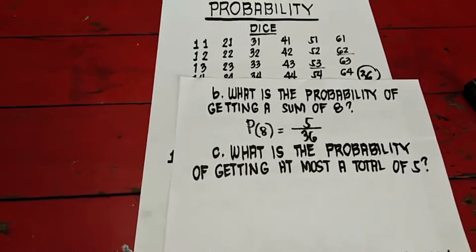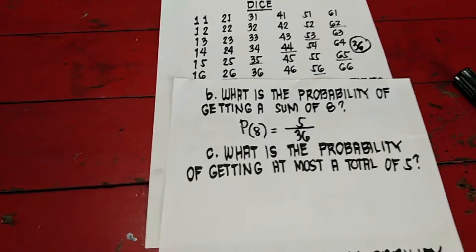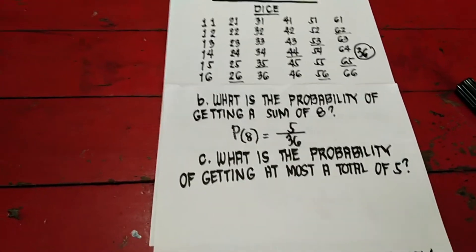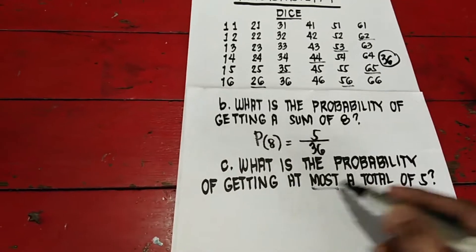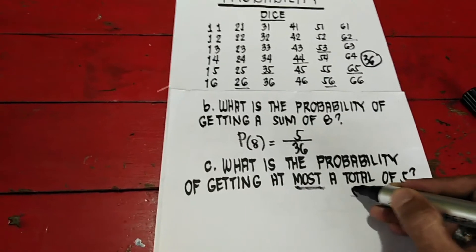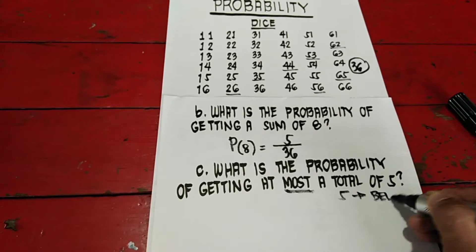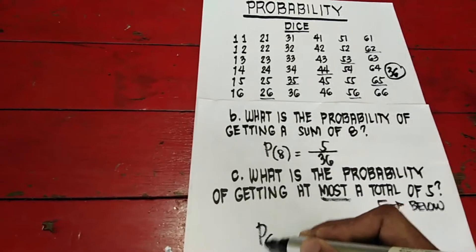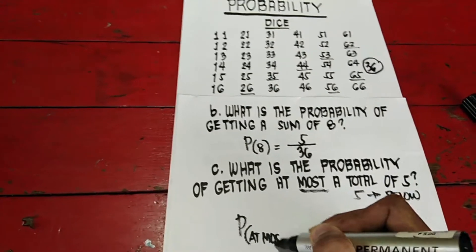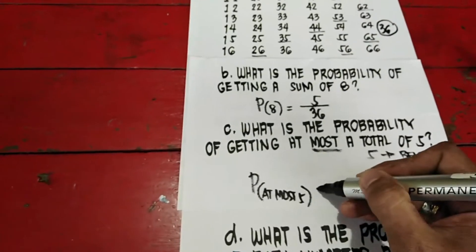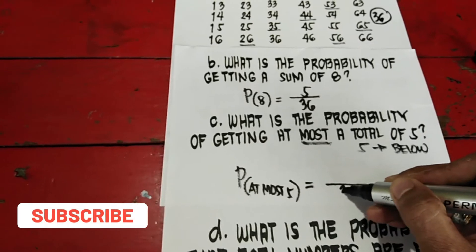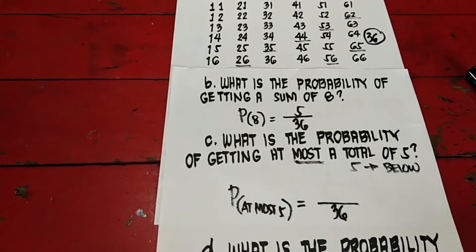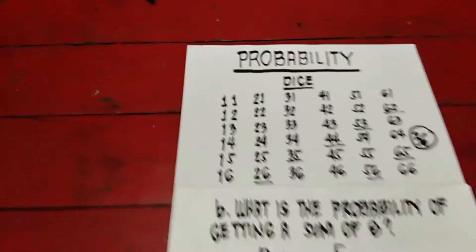Punta naman tayo sa C. What is the probability of getting at most a total of 5? May word na at most. Ibig sabihin ng at most, 5 below. Kailangan yung total niya ay 5 below. Hahanap tayo doon.